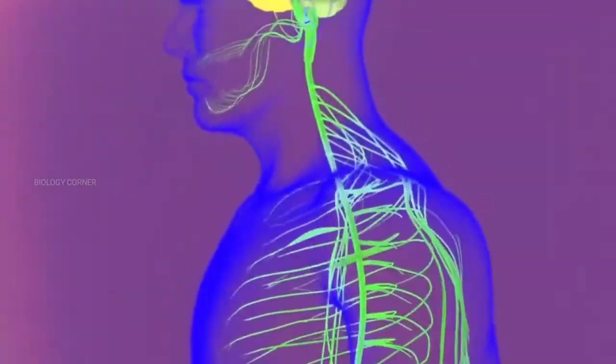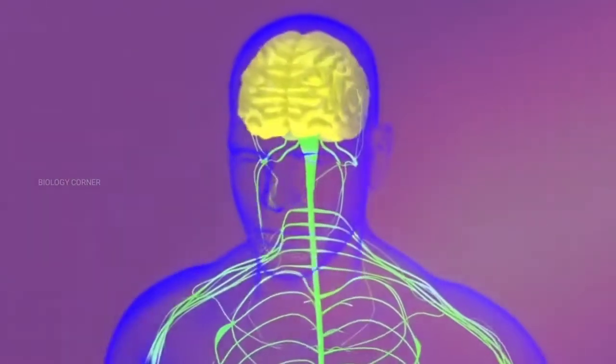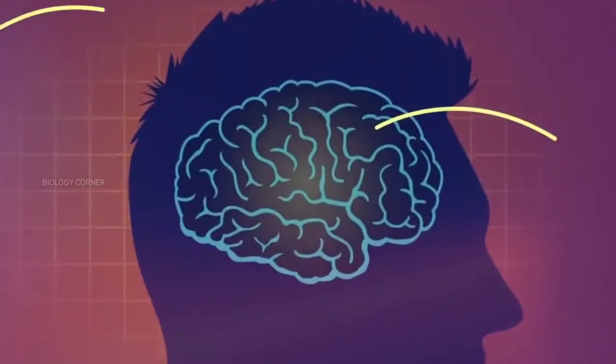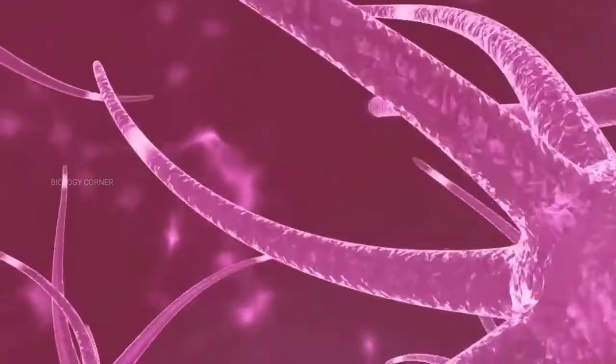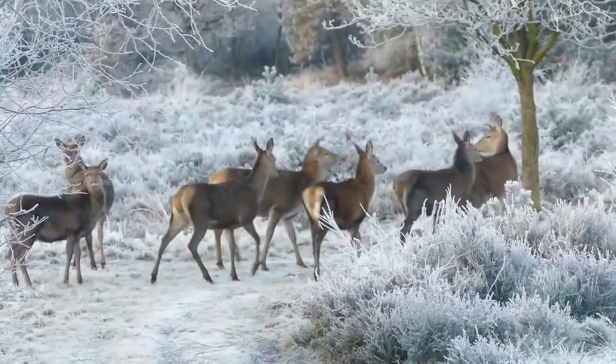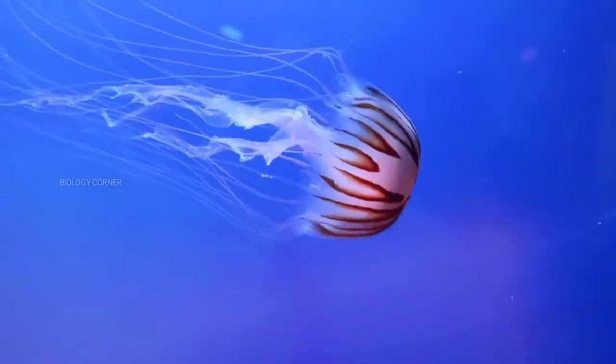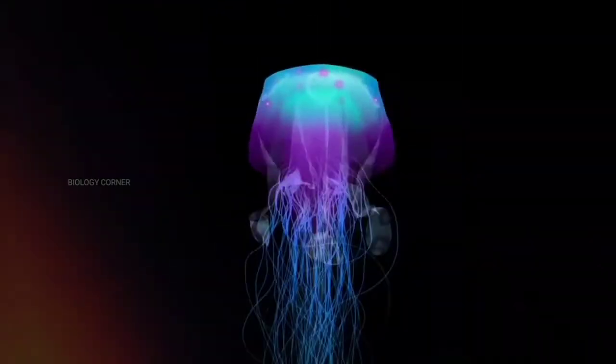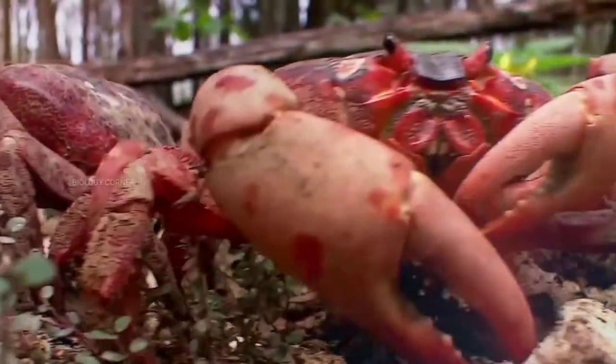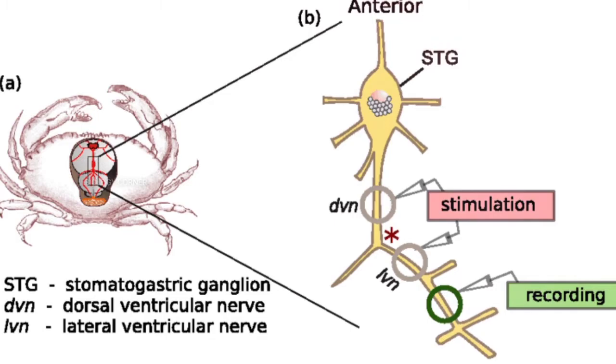The nervous system or neural system is a complex network of neurons specialized to carry messages. The complexity of the nervous system increases as we move towards higher animals. For instance, cnidarians such as jellyfish have relatively simple nerve nets spread throughout their body. Crabs have a more complicated nervous system in the form of two nerve centers called dorsal ganglion and ventral ganglion.